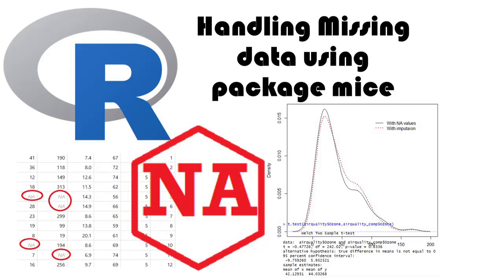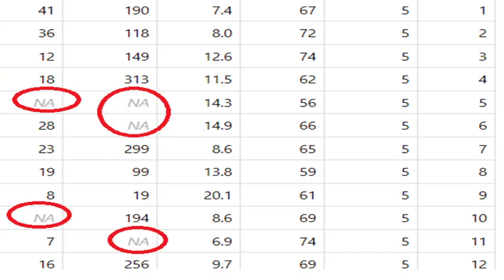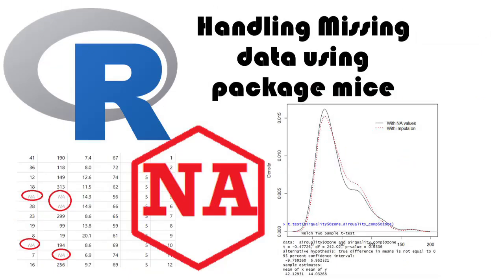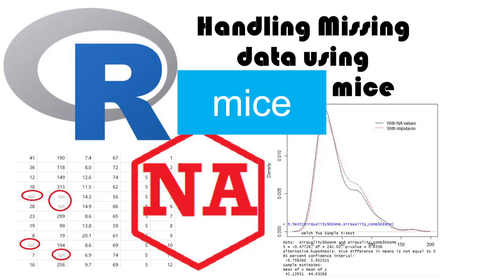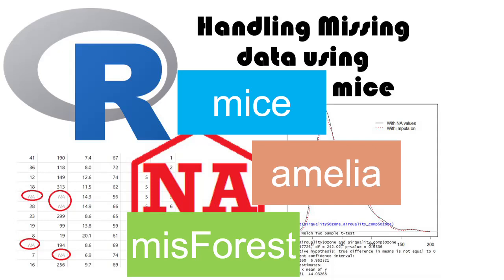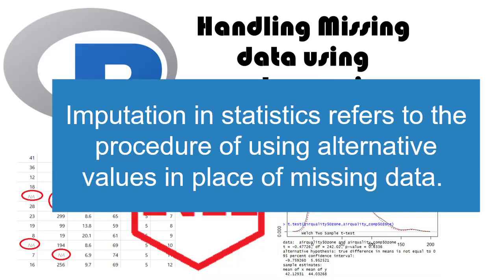Hello friends, welcome to this session of learning R. In this session we are going to learn how to handle missing data. Missing data many times creates big problems during analysis. You cannot calculate many statistics or fit models if missing data is present. There are very good packages in R which handle missing data — those packages are mice, amelia, and misforest. In this session we are going to learn how to use these packages to impute our data.